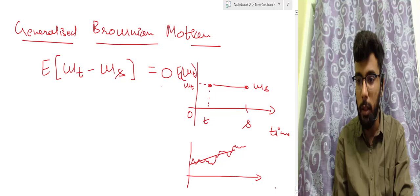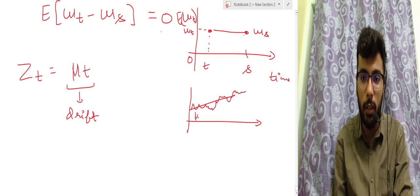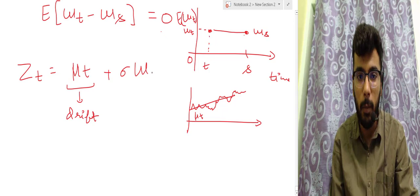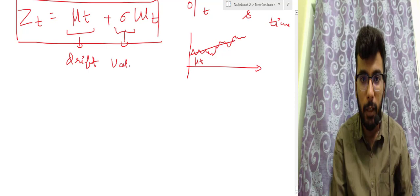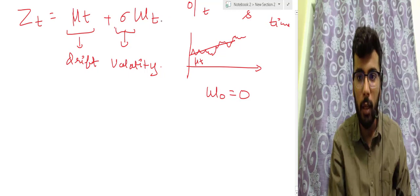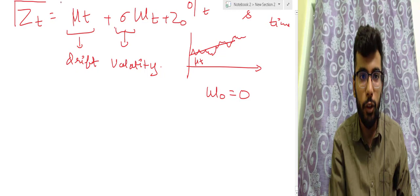Instead, we define a new process Z_T. This is a generalized Brownian motion: Z_T = Z_0 + μ×T + σ×W_T, where μ×T denotes the general trend or drift — a straight-line trend — and σ×W_T captures the volatility via the Wiener process. Z_0 is the starting value, since unlike the Wiener process, the share price does not necessarily start at zero.